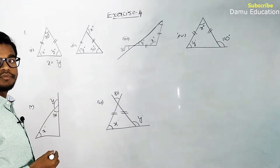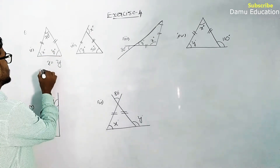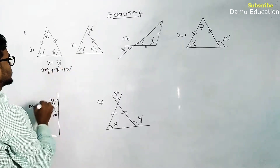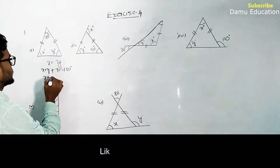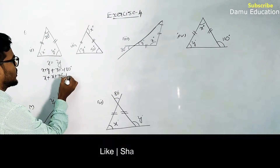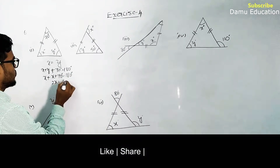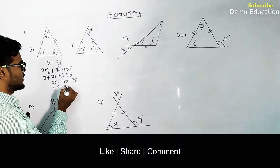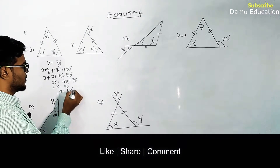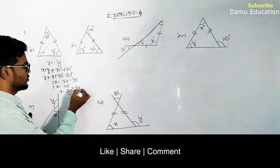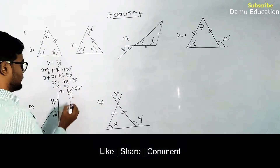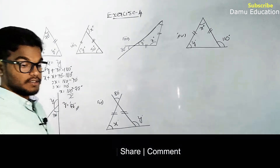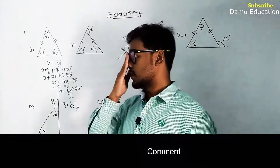Since x equals y, we use the angle sum property of a triangle: x plus y plus 70° = 180°. Substituting y with x: 2x + 70 = 180, so 2x = 110, giving x = 55°. Therefore x = 55° and y = 55°.